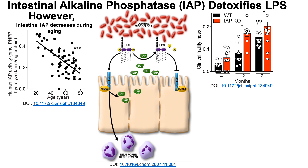This has functional consequences. Looking at frailty index data in mice at 4, 12, and 21 months of age, knocking out IAP — simulating the aging condition — had no effect on frailty in 4-month-old mice, but at 12 and 21 months, the IAP knockout mice were significantly more frail compared to animals that had IAP. Conversely, giving normal wild-type 18- and 21-month-old mice extra IAP made them significantly less frail at both ages.